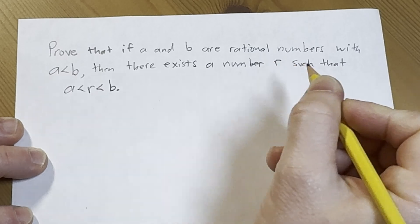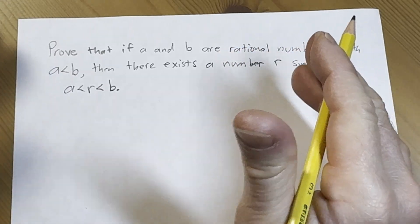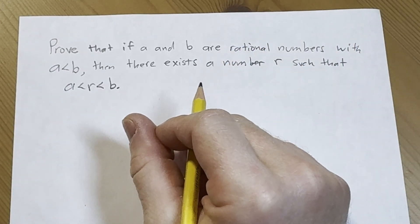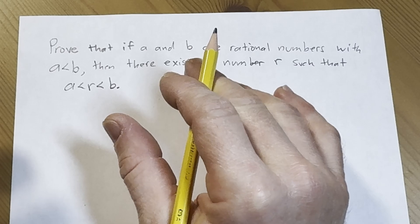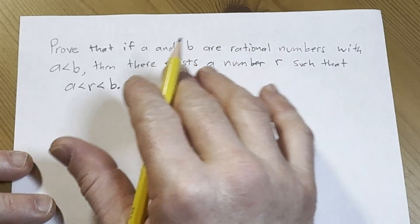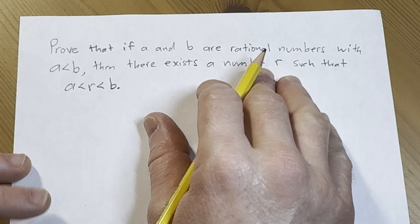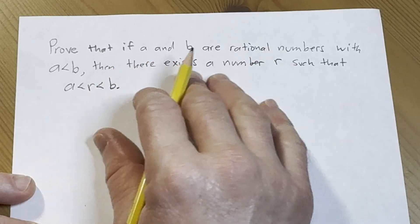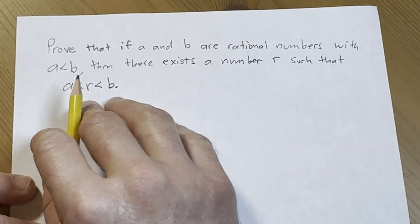So it's basically saying if you have two rational numbers we can find a number between them. It doesn't say it has to be a rational number but it will be. It just says there exists a number, that's all we have to show.